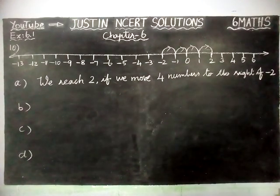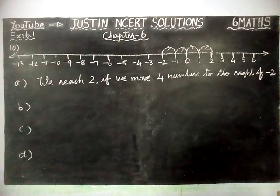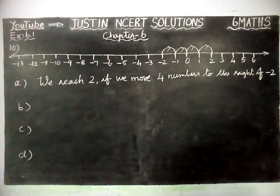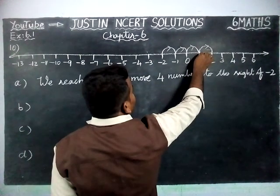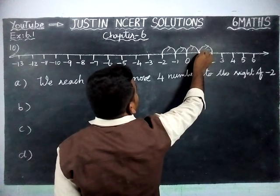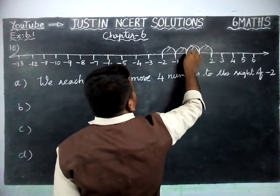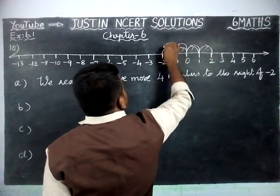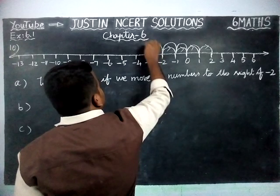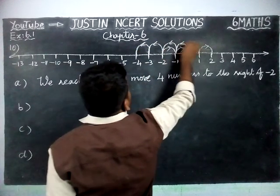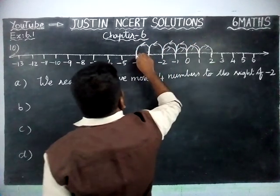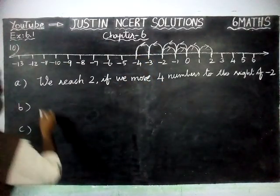Part B question is: which number will we reach if we move 5 numbers to the left of 1? From number 1, 5 moves left side: 1, 2, 3, 4, 5. So if we move 5 steps left-hand side, we will reach number minus 4.